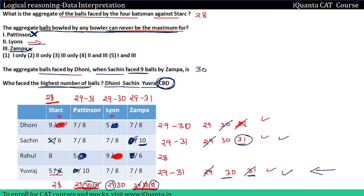So guys, here is our set complete. You can see how we solve this type of set. Although we didn't need every value, we satisfied and checked all conditions. But I just checked because sometimes we have a set where our values are not satisfied, so you have to focus and try at least once that your values are satisfied or not. Thank you guys and happy learning!